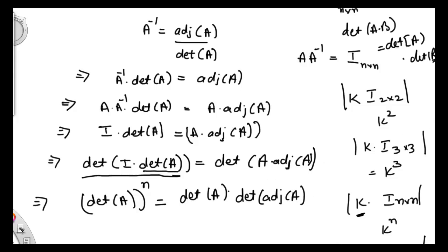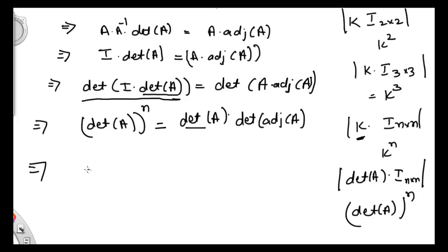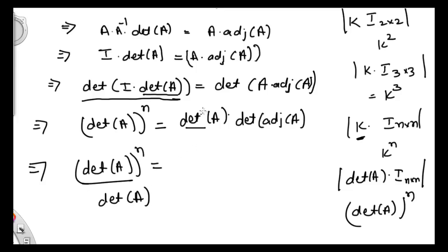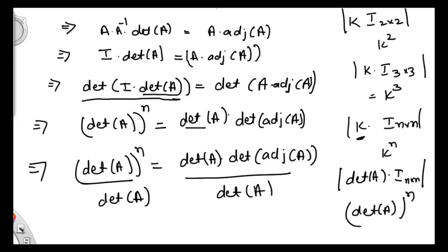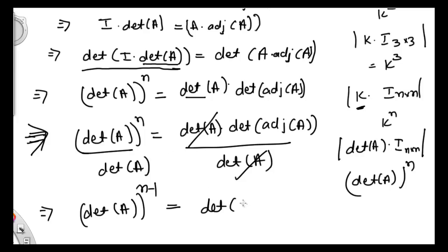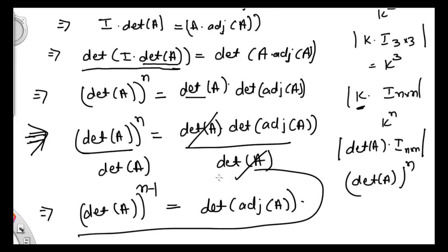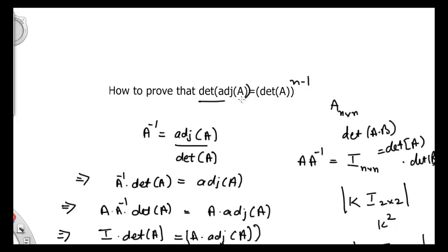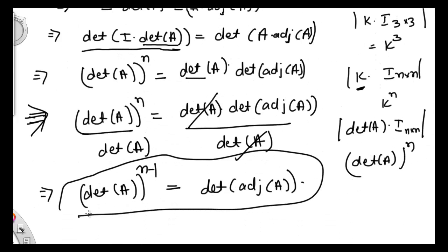Now I just need to shuffle the terms and we will get our result. Dividing both sides by determinant of A: this determinant of A cancels, and I get on the left hand side determinant of A power n minus 1, equal to determinant of adjoint of matrix A. So that's it — that was what we needed to prove: that determinant of adjoint A is equal to determinant of A power n minus 1. This is our result.